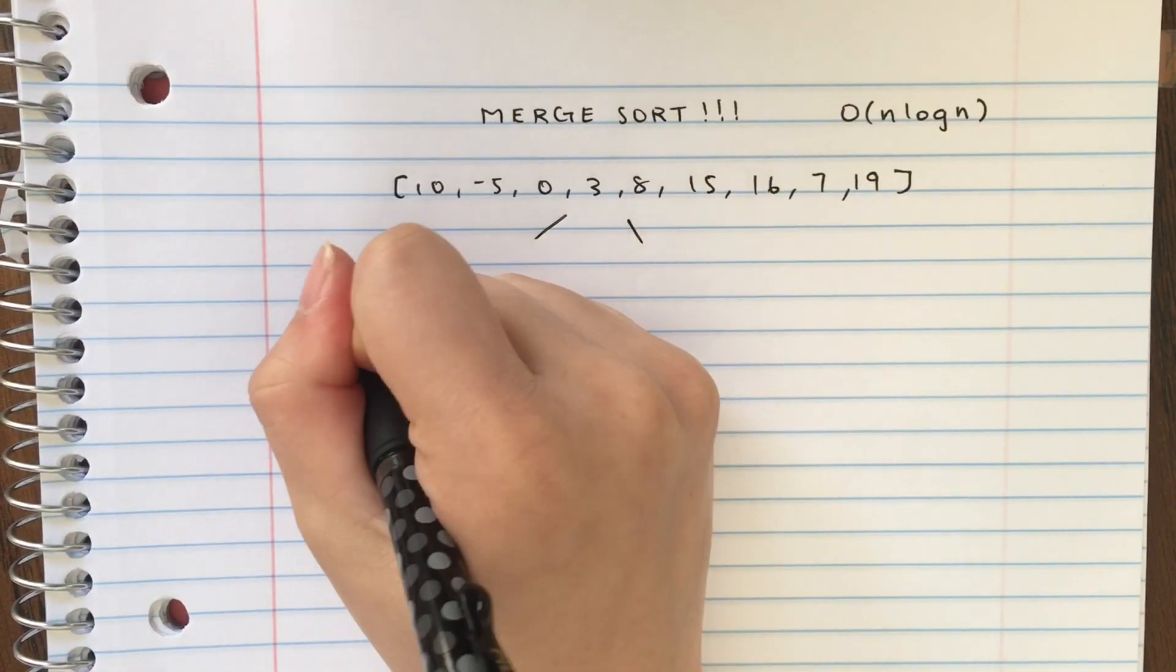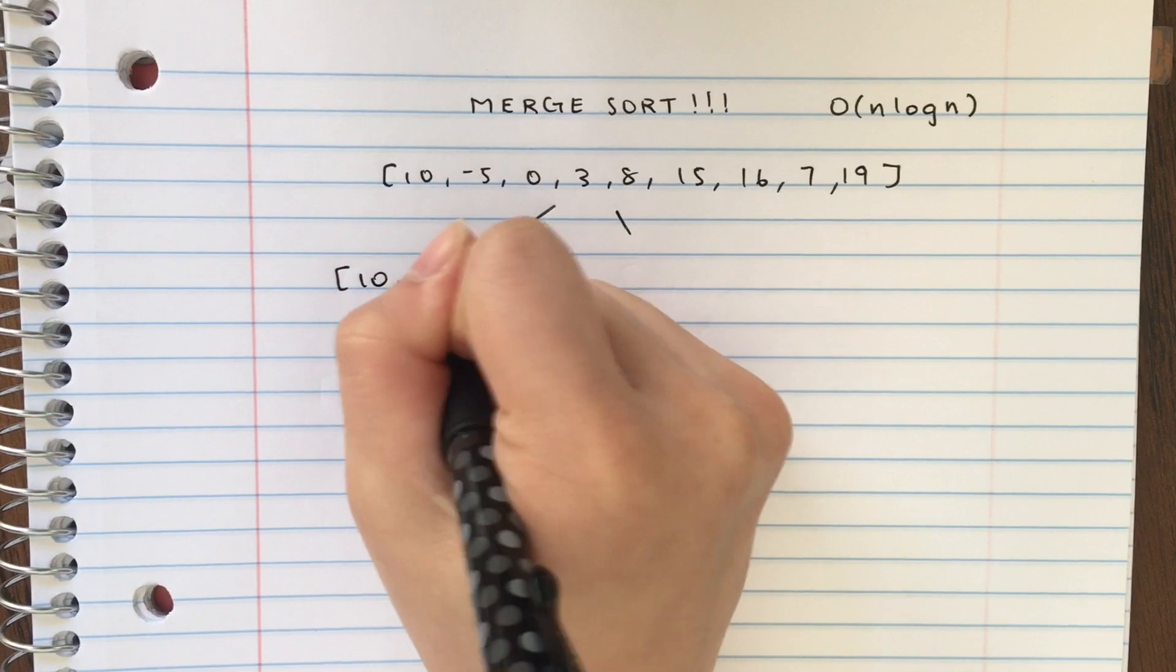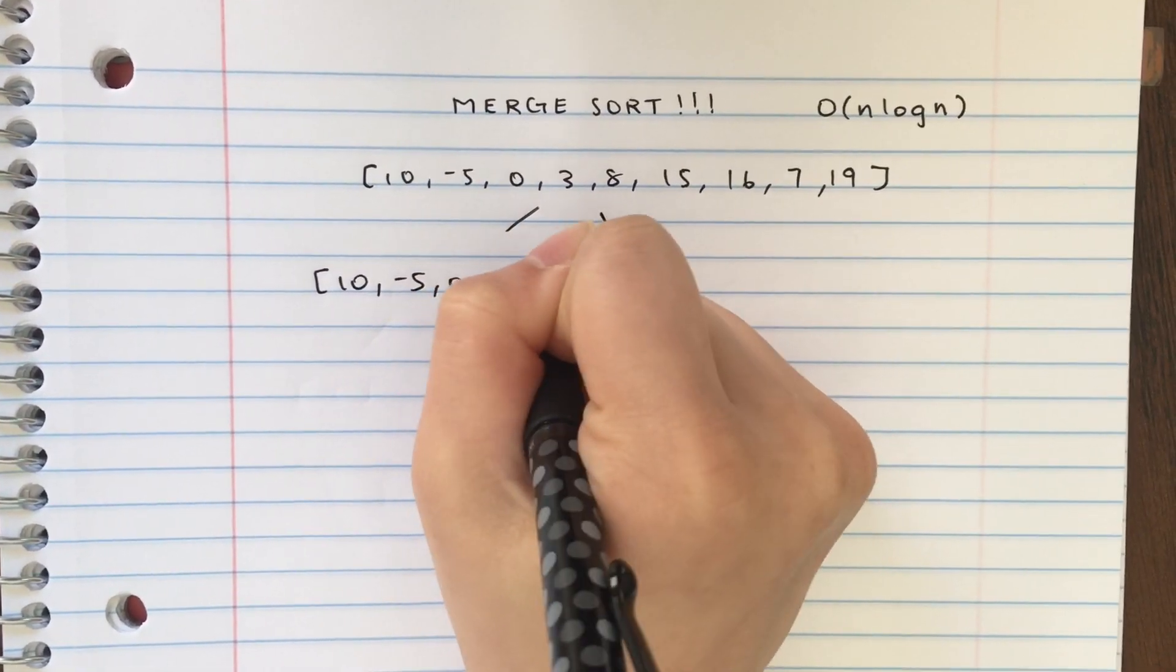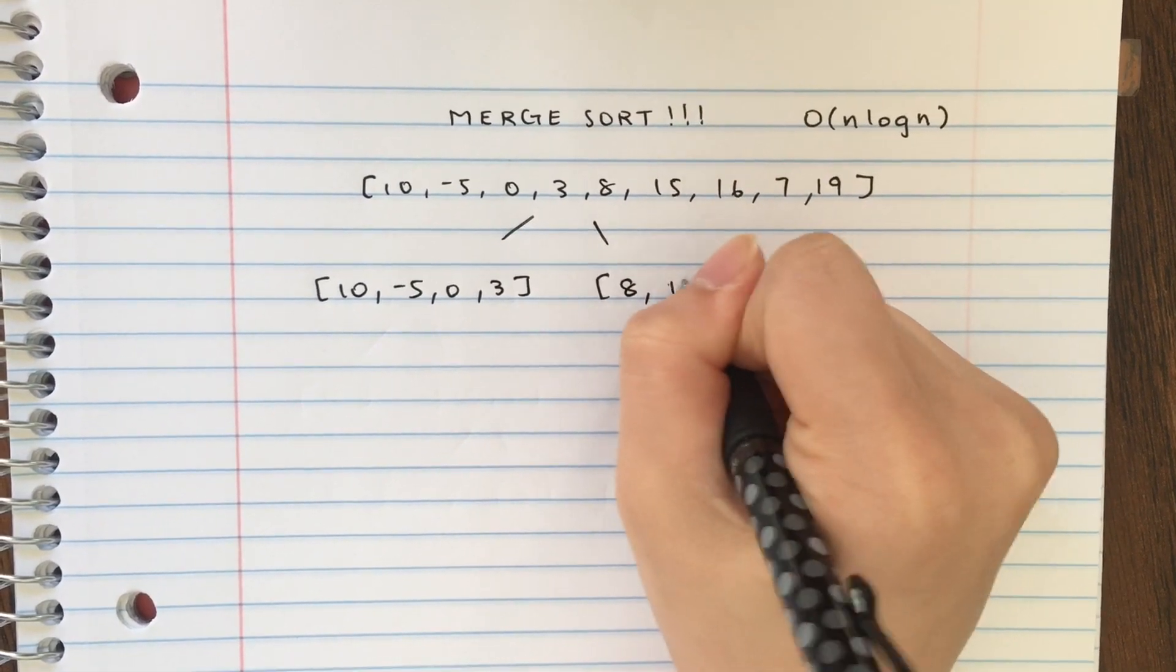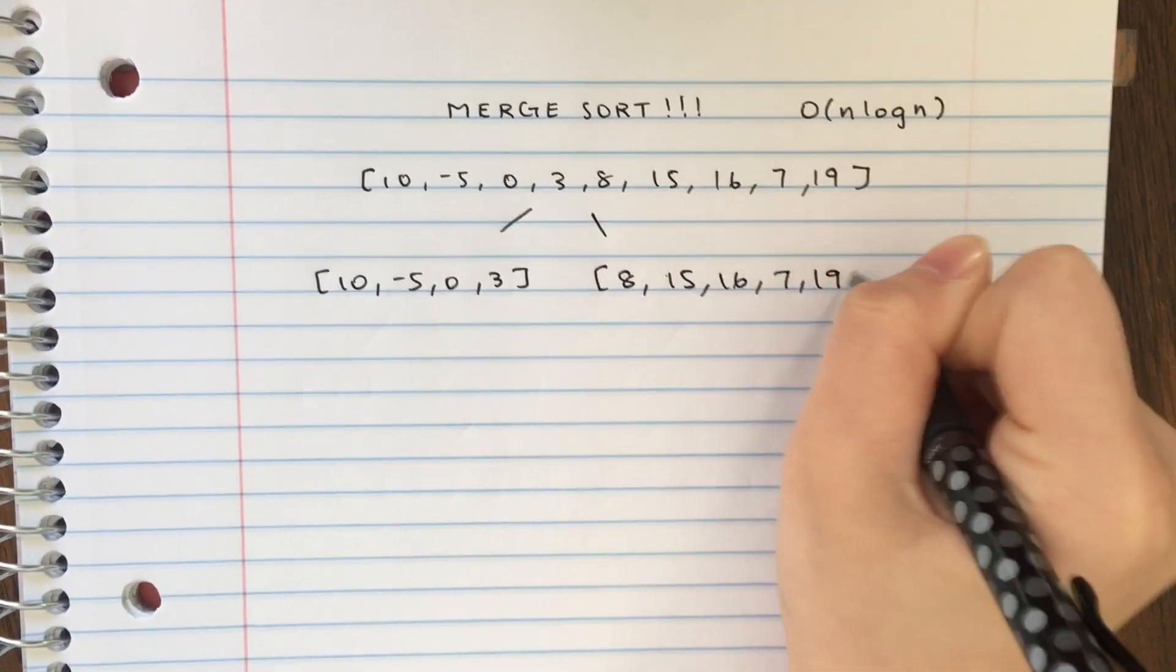So we're going to go ahead and divide this into two halves and I'm going to put the extra element on the right for this example.